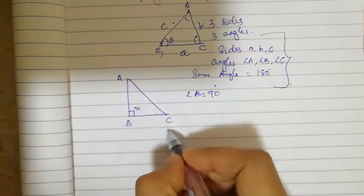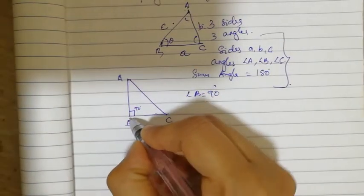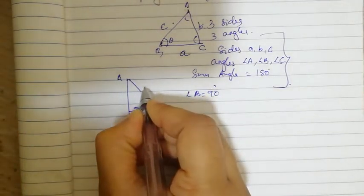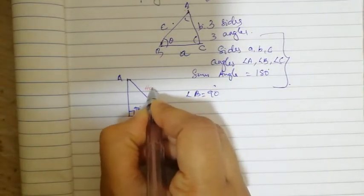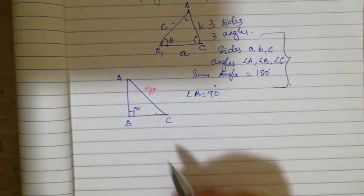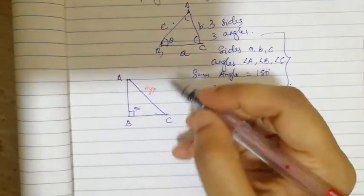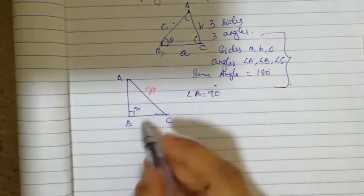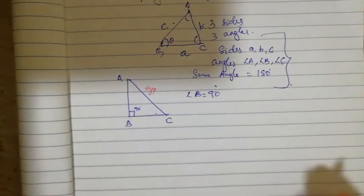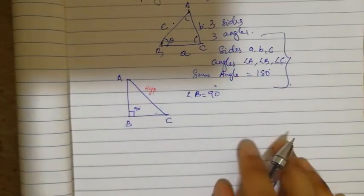This side opposite to the 90 degrees is the hypotenuse. This is the base, and this is the height — everybody knows that.